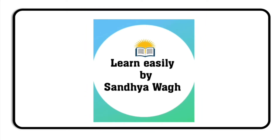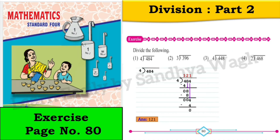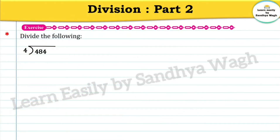Hello dear students, today we are going to learn and understand division part 2 from mathematics textbook standard 4. We have solved exercise on page number 79 — do watch that video to understand this topic better; the link is given in the description box below. In that video we studied how to divide a two-digit number by a one-digit number. Now in today's video we will learn how to divide a three-digit number by a one-digit number, and we will solve the exercise on page number 80.